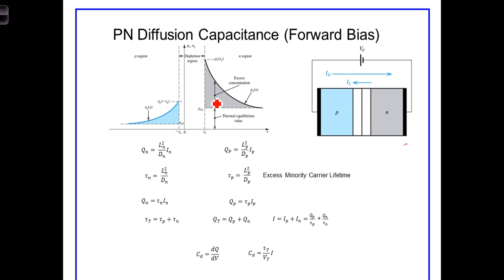As we've discussed, in a forward biased diode, holes diffuse from the P region across the depletion region to the N region, and electrons diffuse similarly in the opposite direction. Holes diffusing this way, electrons diffusing this way, creating this excess concentration of minority carriers.